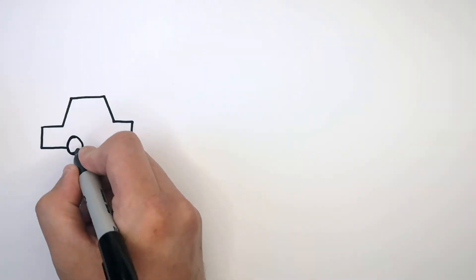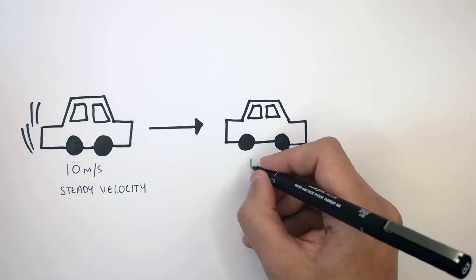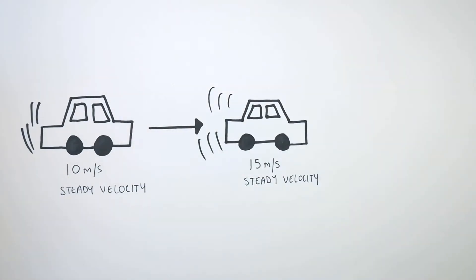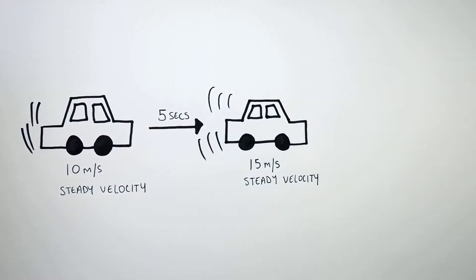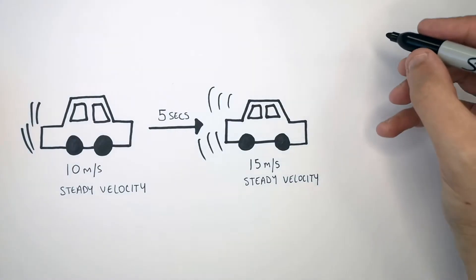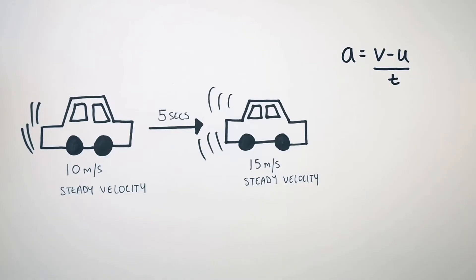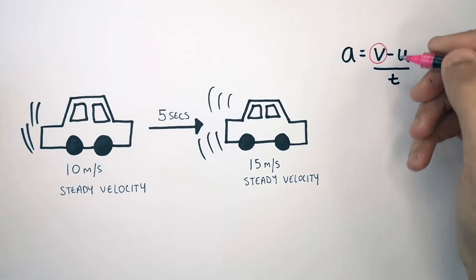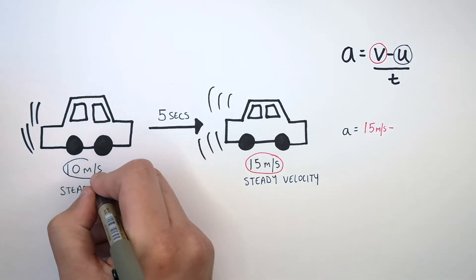We're going to use the same car as before. It is now traveling at a steady velocity of 10 meters per second, and it's going to accelerate from 10 meters per second to 15 meters per second, and it no longer accelerates. It takes 5 seconds for the car to accelerate from 10 to 15 meters per second. We want to calculate the new acceleration. Recall the equation a equals v minus u over t. Identify v, the final velocity, which is 15 meters per second, and u, the initial velocity, which is 10 meters per second.